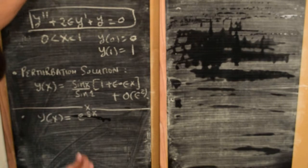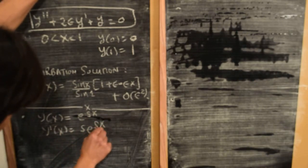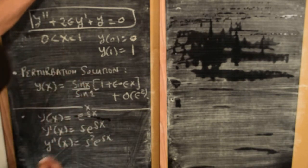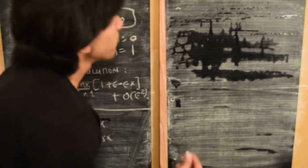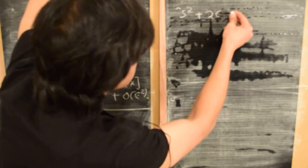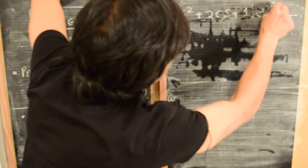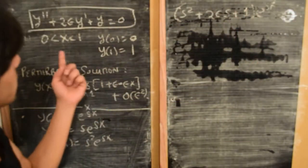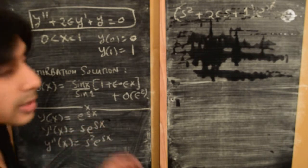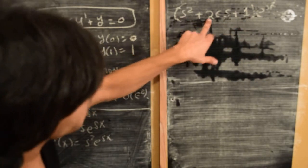If we make this ansatz, the first derivative y' is s·e^(sx) and the second derivative is s²·e^(sx). So the entire equation converts into an algebraic equation: y'' gives us s², plus 2ε times the first derivative gives s, plus 1, all multiplied by e^(sx) equals zero. Since x is in the range 0 to 1, e^(sx) is finite, and if s is not infinite, we must solve for the parameter s.